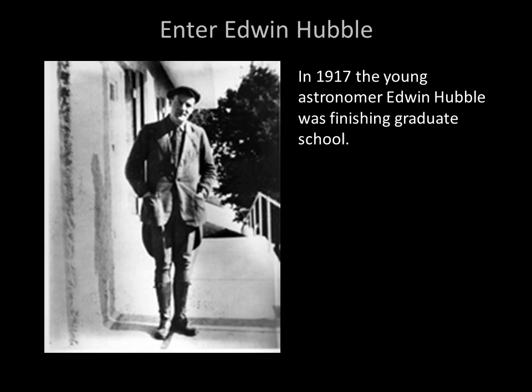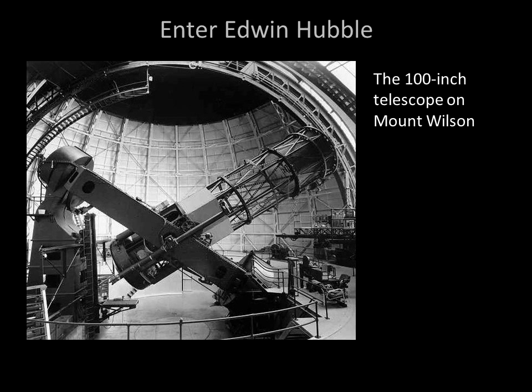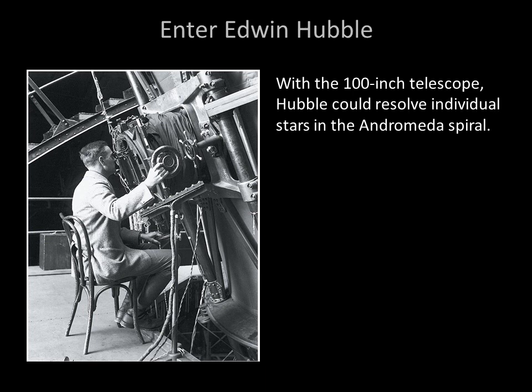In 1917, a young astronomer named Edwin Hubble was finishing graduate school. He was invited to join the staff at the prestigious Mount Wilson Observatory in Pasadena, California. The observatory had just completed construction of a 100-inch telescope, the world's largest at the time. Hubble delayed accepting the position for two years so that he could serve in World War I. But once at Mount Wilson, Hubble began observing the spiral nebulae, and with the 100-inch telescope he could actually resolve individual stars in the Andromeda spiral, suggesting that it was indeed a separate galaxy.